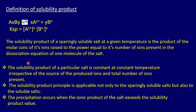The solubility product of a particular salt is constant at a constant temperature, irrespective of the source of the ions or the total number of ions present. The solubility product principle applies not only to sparingly soluble salts but also to soluble salts. Most importantly, precipitation occurs when the ionic product of the salt exceeds the solubility product value at a given temperature.